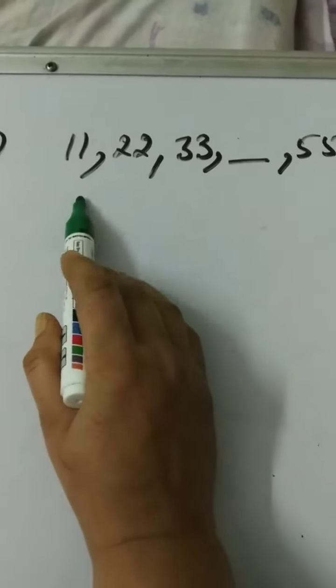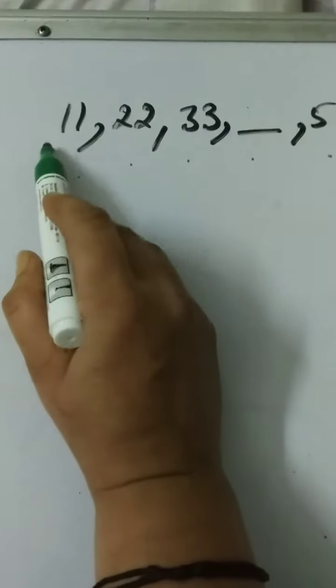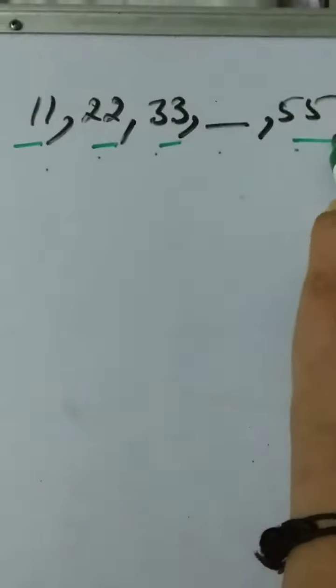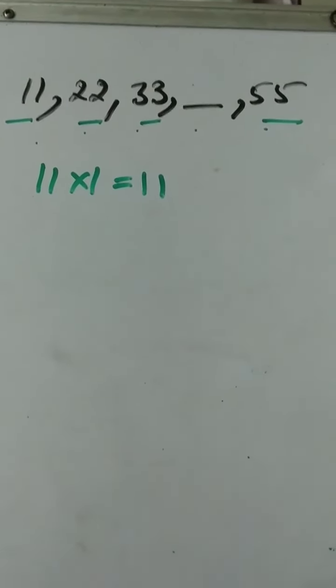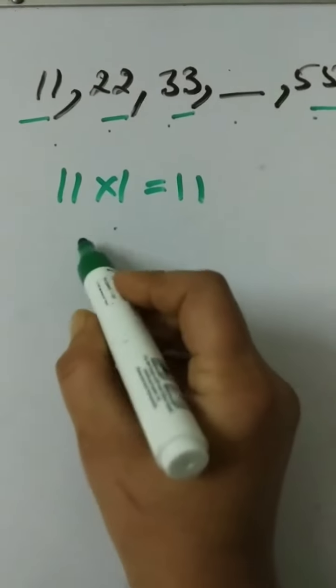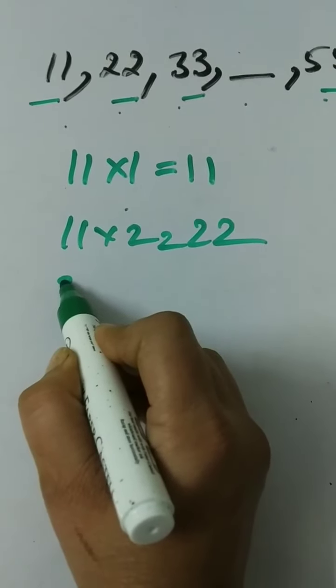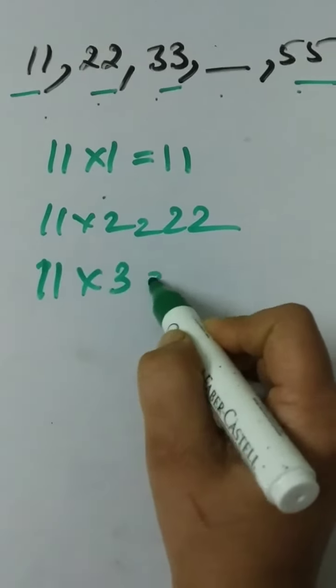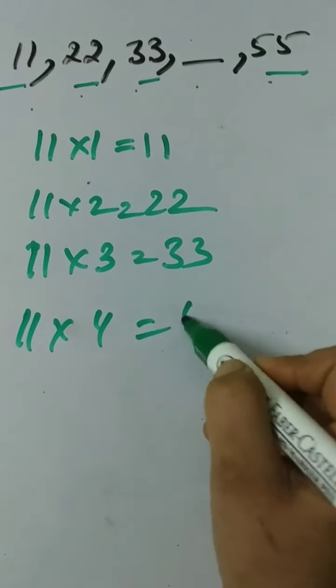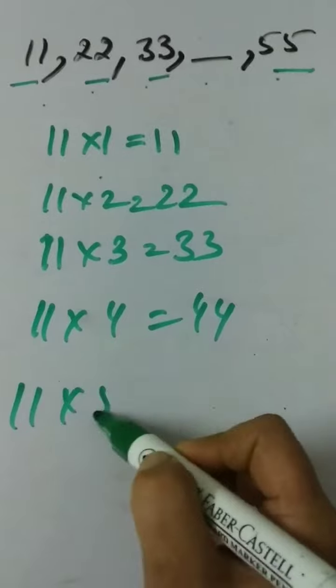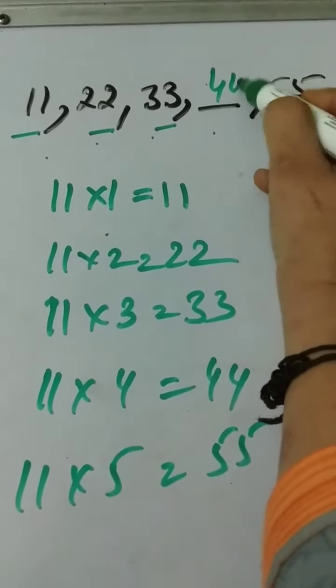Tenth fill up: 11, 22, 33, dash, 55. So if you see the given numbers, these numbers are concerned with the table of 11. 11 ones are 11 like this. 33, 33—11 times 3 is 33. 11 times 4 is 44. 11 times 5 is 55. What number will come in the fill up? 44.